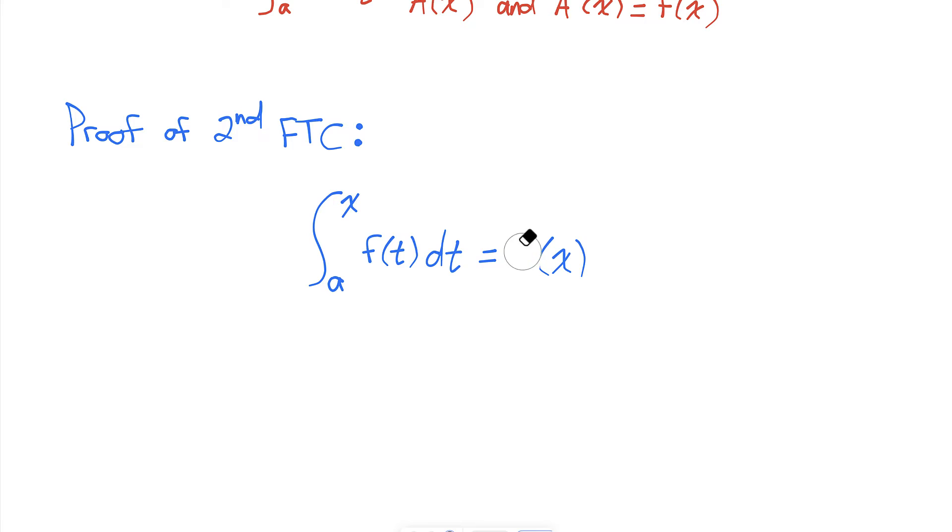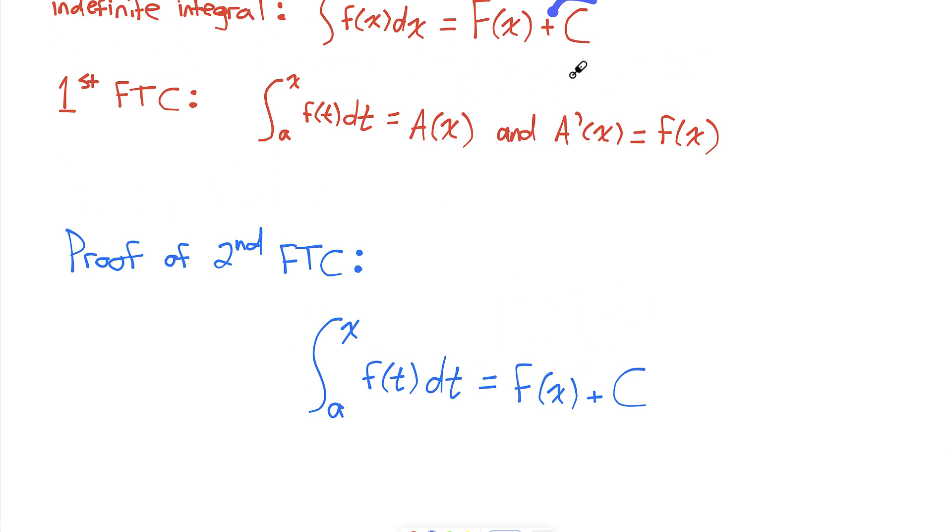So for this area function, I could rewrite it as F(x) plus some constant. Now when we do an indefinite integral, like up here, there's an infinite number of constants that could make this true. But when we're doing a definite integral where we've defined the lower and upper boundaries, there's only going to be one value of the constant that is going to get us the correct area under the curve.